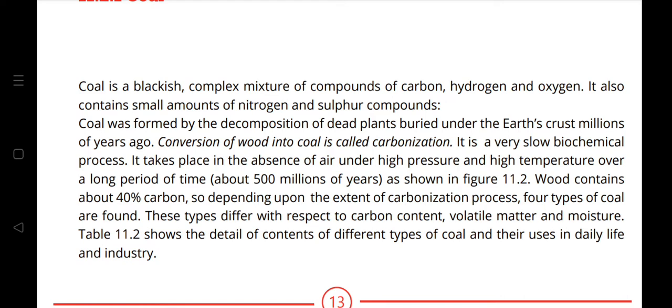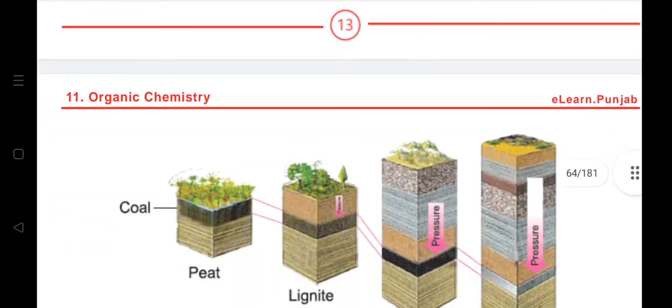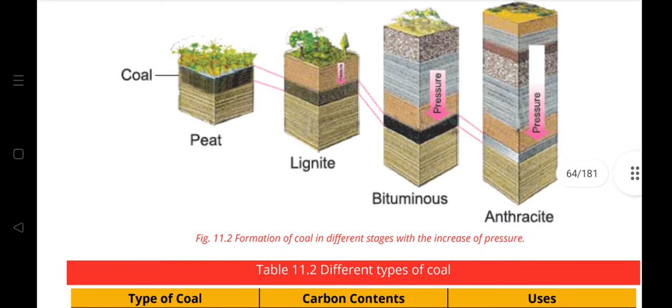The process begins with material containing about 40% carbon. Depending on the extent of carbonization, four types of coal are found, differing in carbon content, volatile matter, and moisture. Table 11.2 shows the contents and uses of different coal types. These stages, shown in Figure 11.2, are: peat, lignite, bituminous, and anthracite.